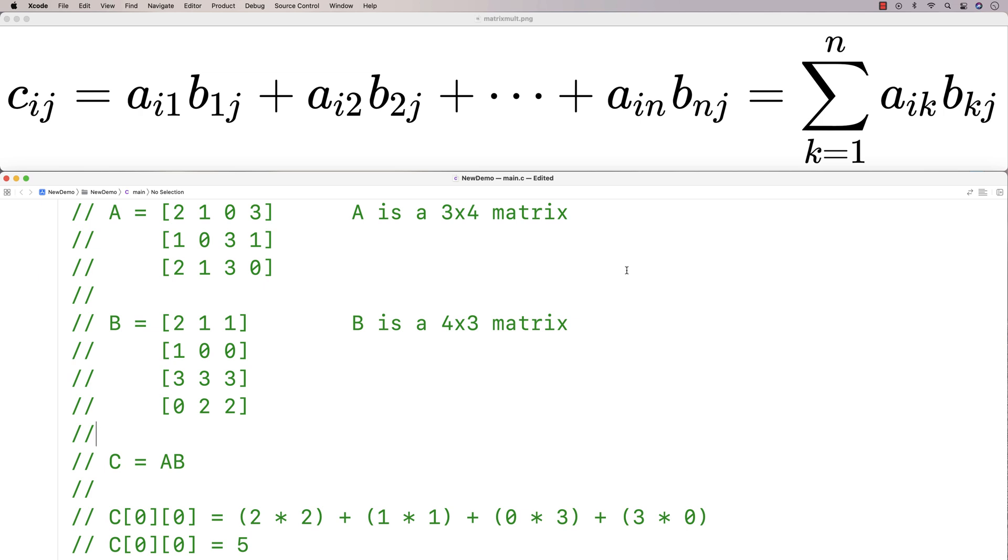In this video, I'm going to go over how to implement the matrix multiplication algorithm in C. The matrix multiplication algorithm uses two input matrices, which we generally call A and B, to produce a new matrix, which we generally call C.